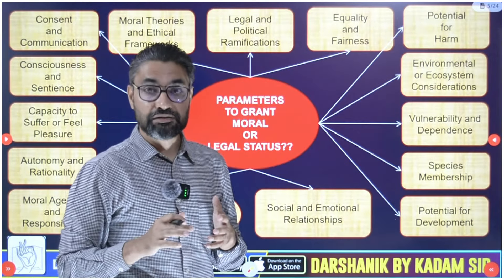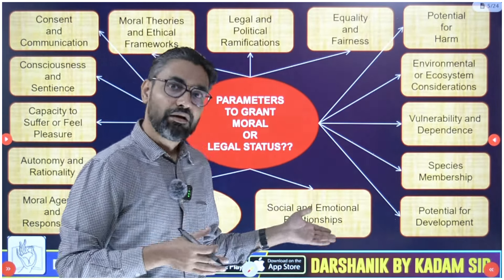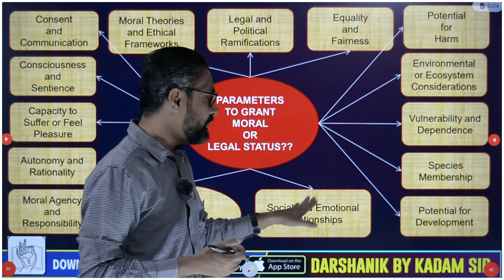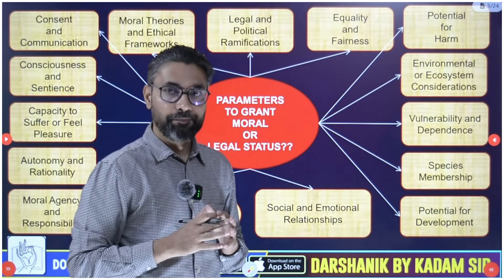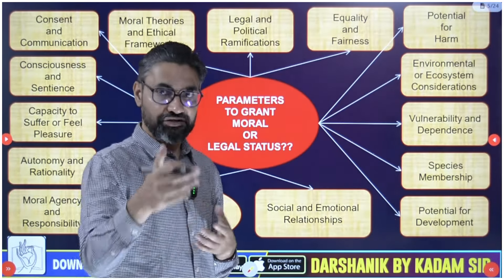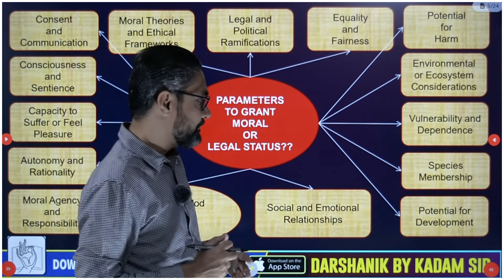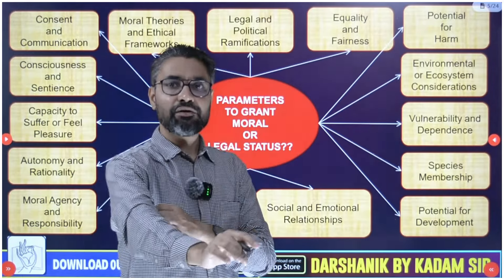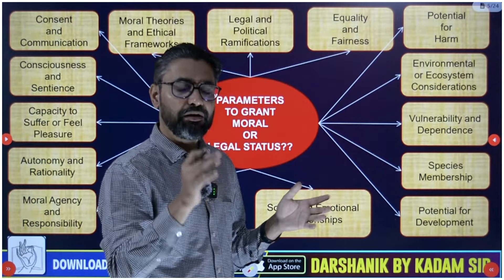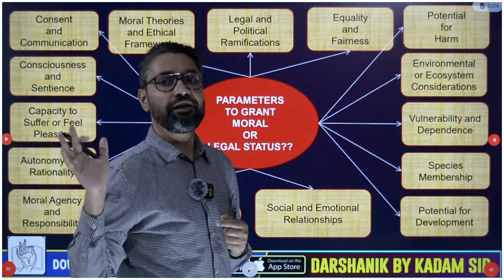There are different sexual orientations and different genetic combinations like transgenders that we need to consider in the personhood debate. The sixth parameter is social and emotional relationships - whether that entity is capable of forming social and emotional bonds. People in a vegetative state cannot form social bonds, cannot interact, and are not autonomous. The ability to form social emotional relationships is an important parameter. Using all 15 parameters, you will be able to frame a very good answer to any complex ethics question.